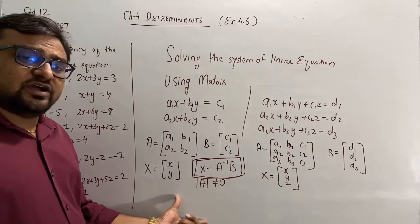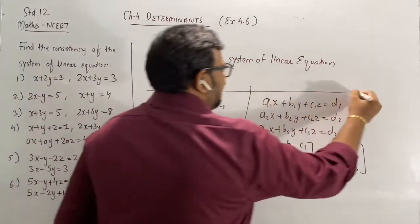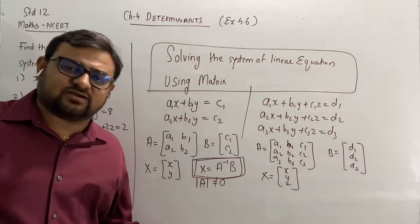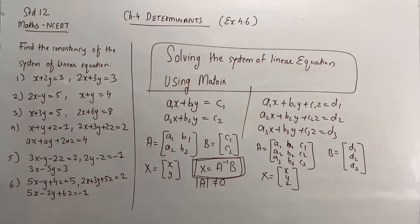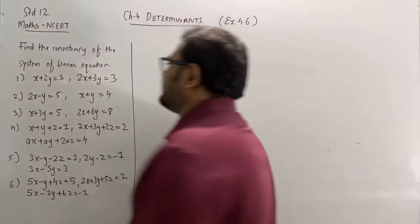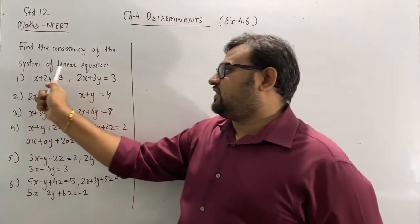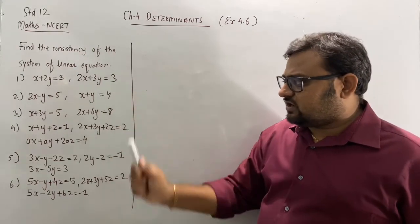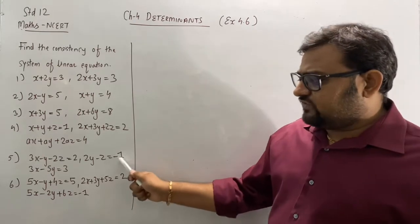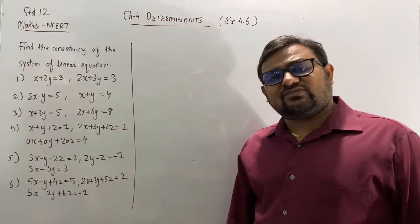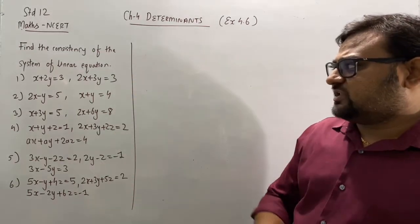So this is the method to solve the linear equation using matrix. Just note down this method. Now let's start with the exercise. You have to find out the consistency of the system of linear equations. First, second, and third are in two variables; fourth, fifth, and sixth are in three variables. I will do one from the first three, so let's solve the first one.